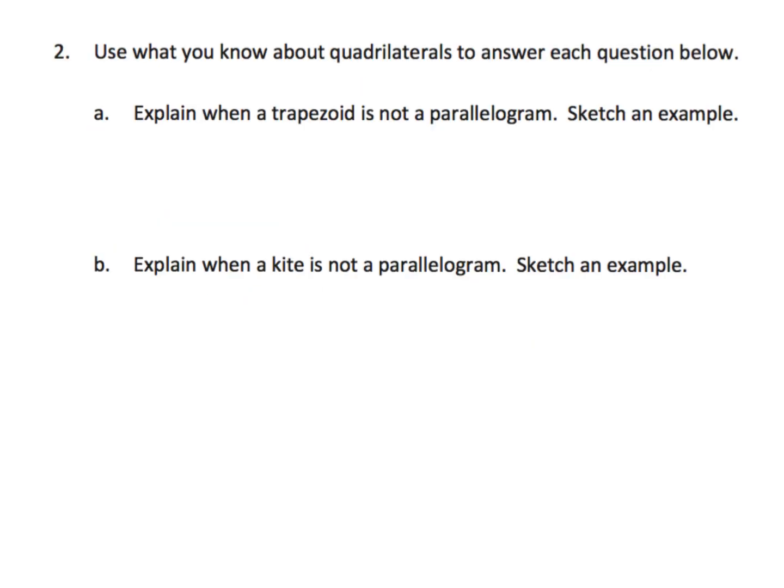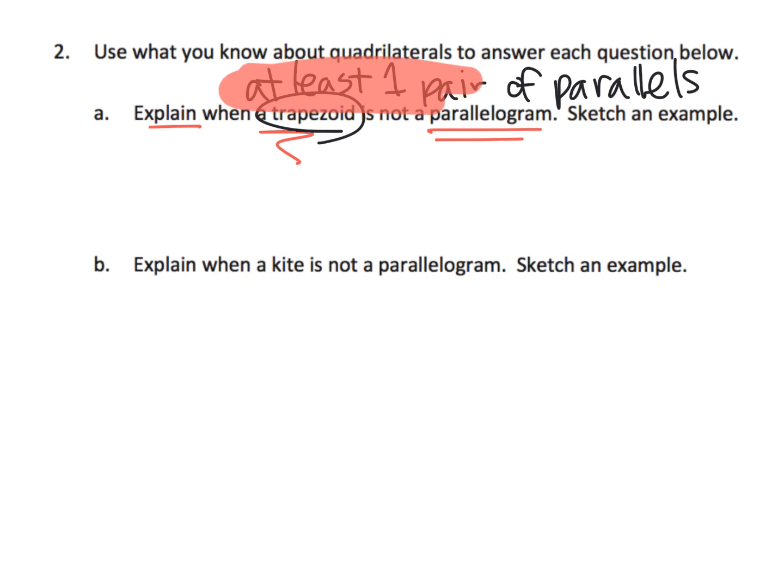And the last slide for this video, use what you know about quadrilaterals to answer each question below. Explain when a trapezoid is not a parallelogram. Now, you'll remember, you've got to remember, what is a trapezoid? It's at least one pair of parallel lines. And I'm just going to put parallels, of parallels. One, at least one pair. And that's the tricky thing right there. The tricky thing is, it's at least one pair.